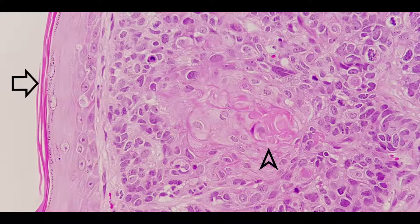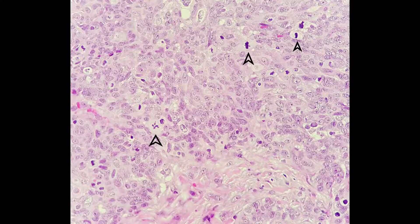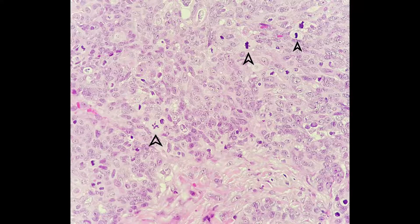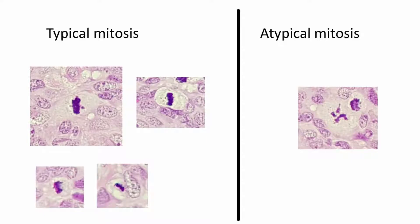The keratin produced by the malignant cells is the same as the keratin seen at the overlying skin. This malignant tumour also shows multiple mitoses. Most of the typical mitoses seen are in metaphase, but there is also one atypical mitosis present. Here the mitoses are shown separately for easy viewing — the group on the left is the typical mitoses and the one on the right is the atypical mitosis.